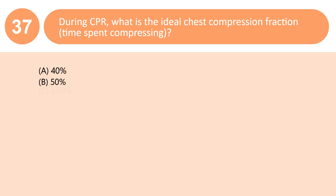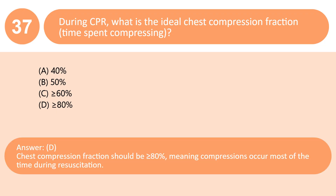During CPR, what is the ideal chest compression fraction (time spent compressing)? A. 40%. B. 50%. C. ≥60%. D. ≥80%. Answer: D. Chest compression fraction should be greater than or equal to 80%, meaning compressions occur most of the time during resuscitation.